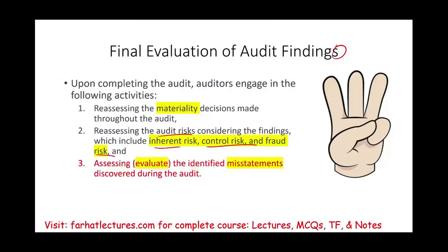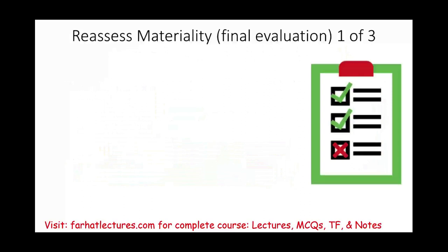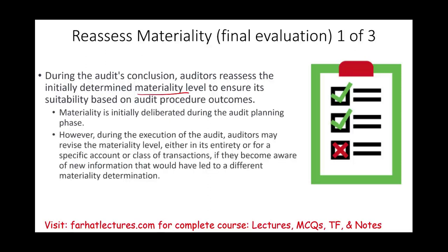Starting with reassessing materiality — the final evaluation of materiality. During the audit conclusion, the auditor reassesses the initially determined materiality level to ensure it's suitable based on the procedure outcomes. At the beginning, we set materiality at a certain number. During the audit, we might have revised it as we learned more about the company.